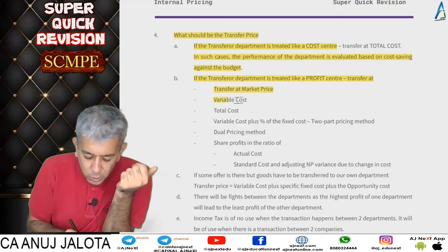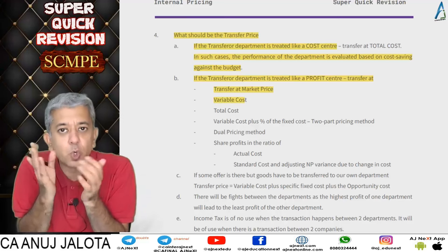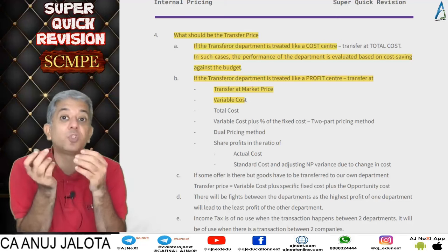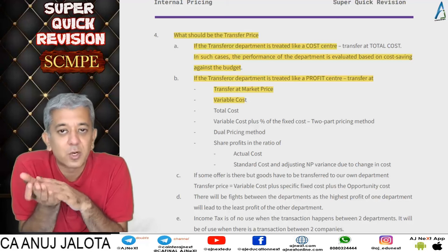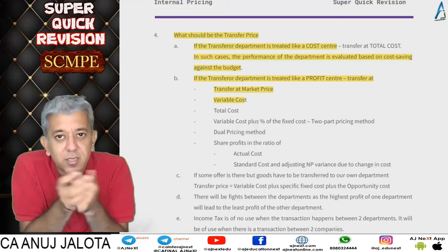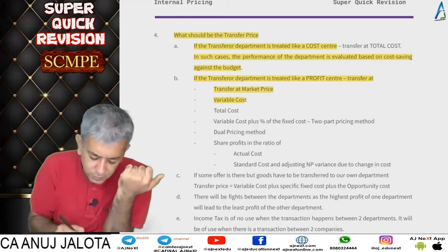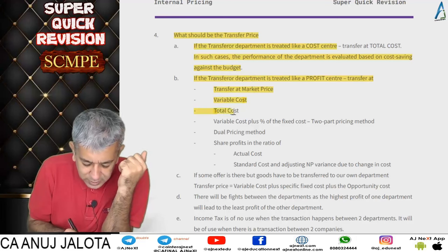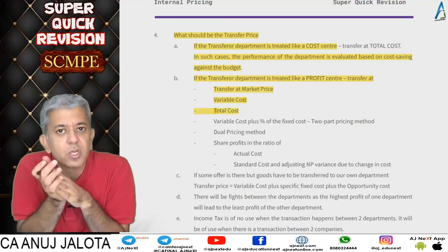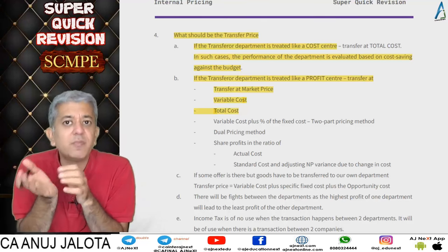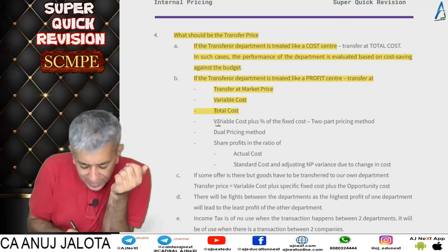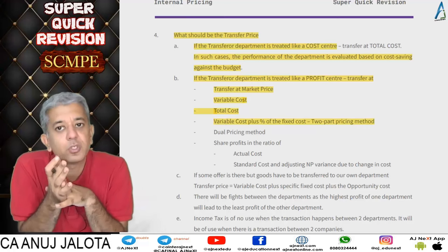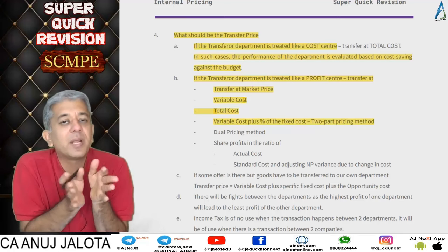However, the transferee division may feel it's unfair — being charged the same price as market customers. You can also transfer at variable cost; the transferee division will be very happy getting goods at variable cost, but obviously the transferring department will not agree. Another method is transfer at total cost — fixed cost plus variable cost — so fixed cost is also recovered, but there is no profit element.